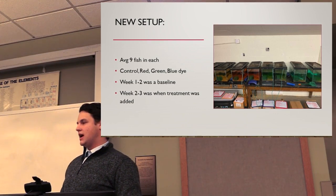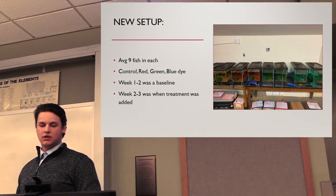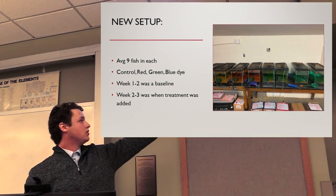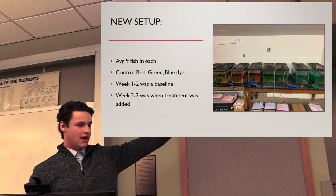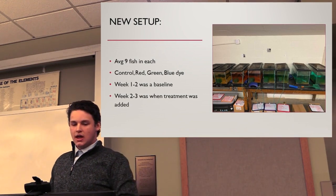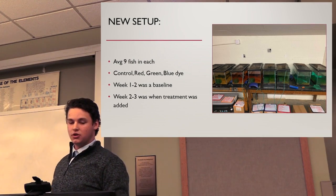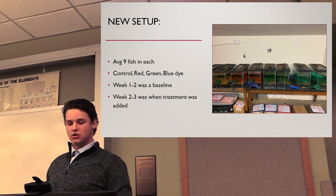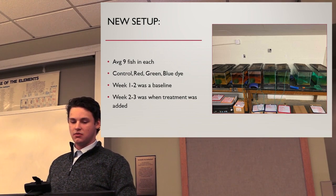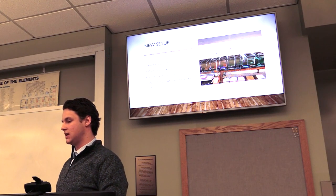Week two to three was when I added the treatment, which is when I put the dye in. I put five drops of dye in each of the tanks, and you can see there are two of the same dye-colored tanks that match up with each other. The tanks were set up with a filter, two air stones, two garden pots, and the fish were fed 0.7 grams of fish flakes daily.